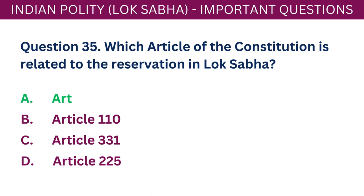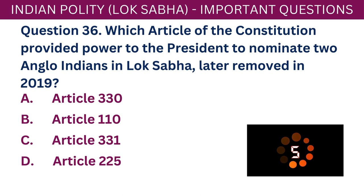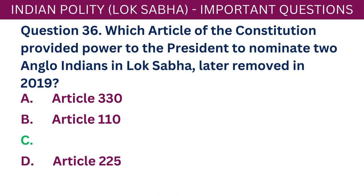Question 36: Which article of the Constitution provided power to the President to nominate two Anglo-Indians in Lok Sabha, later removed in 2019? A. Article 330. B. Article 110. C. Article 331. D. Article 225. The correct answer is C - Article 331.